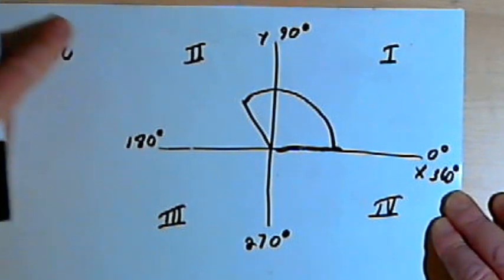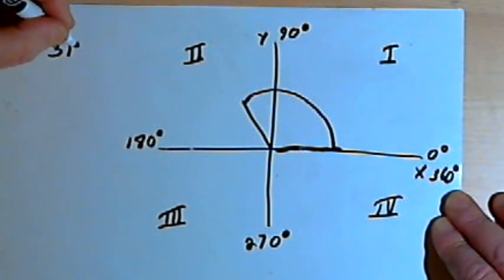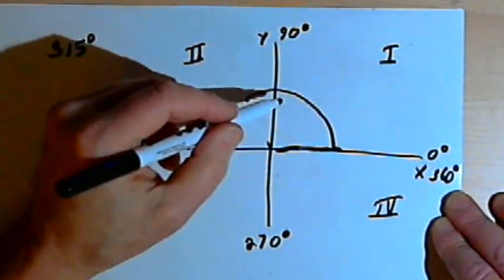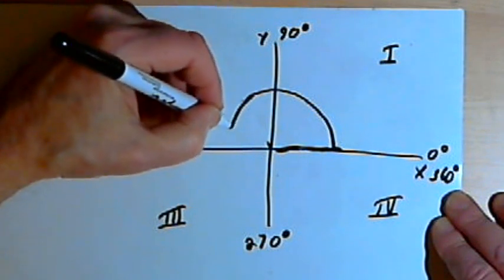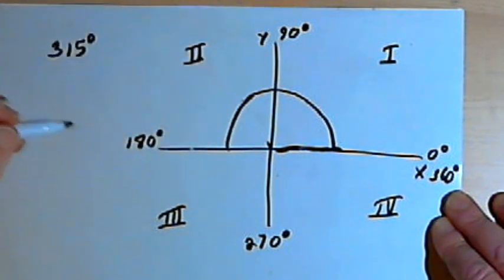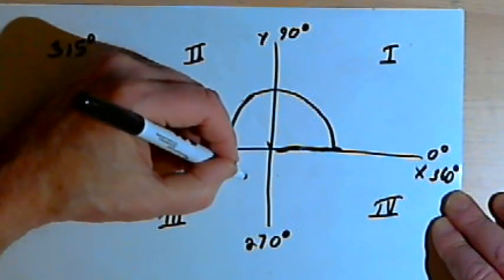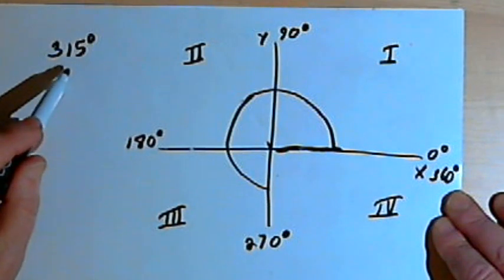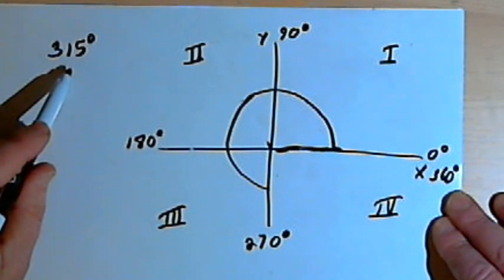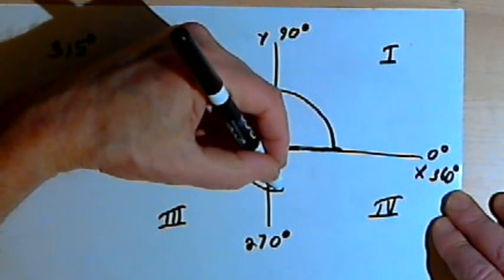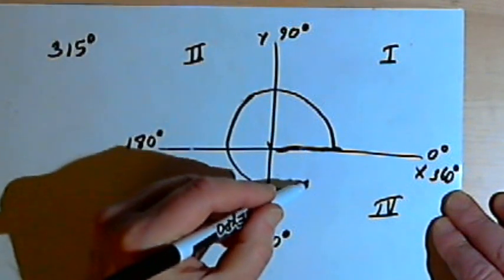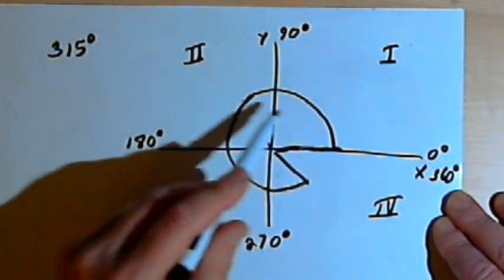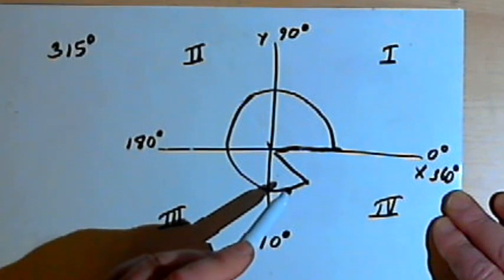Let's say we want to go 315 degrees. We're going to go 90 degrees through the first quadrant, another 90 degrees — a total of 180 — through the second quadrant, another 90 degrees for 270 through the third quadrant. After the 270 degrees, we still have 45 degrees more to go, so that's going to take us halfway through the fourth quadrant. Our angle of 315 degrees is not quite a full circle — a full circle would be 360.